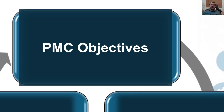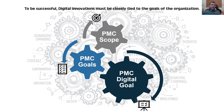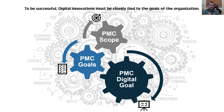First, PMC objectives. To be successful, we have to set our digital innovation tools to be closely tied to the goals of the organization — and our organization is the PMC. We cannot just say, for example, I want to implement laser scanning or implement OpenSpace in our project because I like it or because it is wonderful. You need to set a goal that can be achieved for our organization and connected with the digital tools.